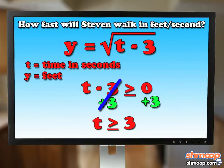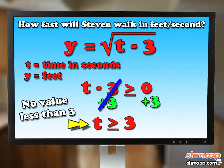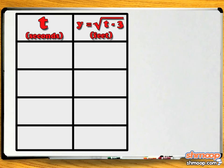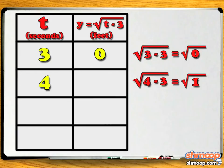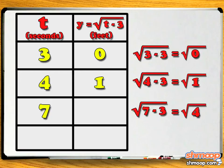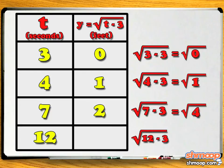Now we can make a table of values. We know the graph doesn't exist at any values of t less than 3, so we don't even bother trying points less than 3. If we plug in t equals 3, we get the square root of 3 minus 3, which equals zero. If t equals 4, the square root of 4 minus 3 is the square root of 1, which is just 1. If t equals 7, we get the square root of 7 minus 3, or the square root of 4, which is 2. If t equals 12, the square root of 12 minus 3 is root 9, which equals 3. Notice that we chose t values that would give us nice, neat y values.